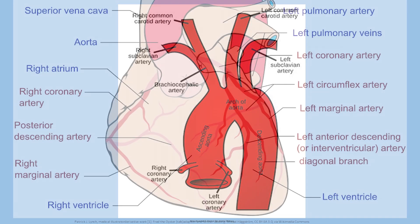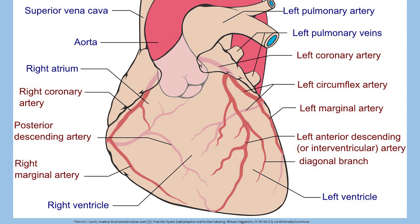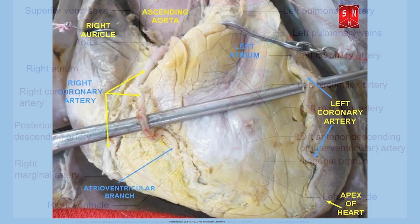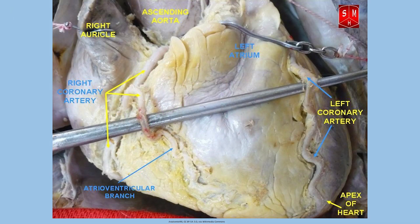The left main coronary artery divides into two main branches — the left anterior descending and the circumflex coronary arteries — supplying most of the left ventricular myocardium. The left anterior descending artery courses across the front of the heart in the anterior interventricular groove to the apex of the heart, as shown here on the right side of the screen in this heart during autopsy.